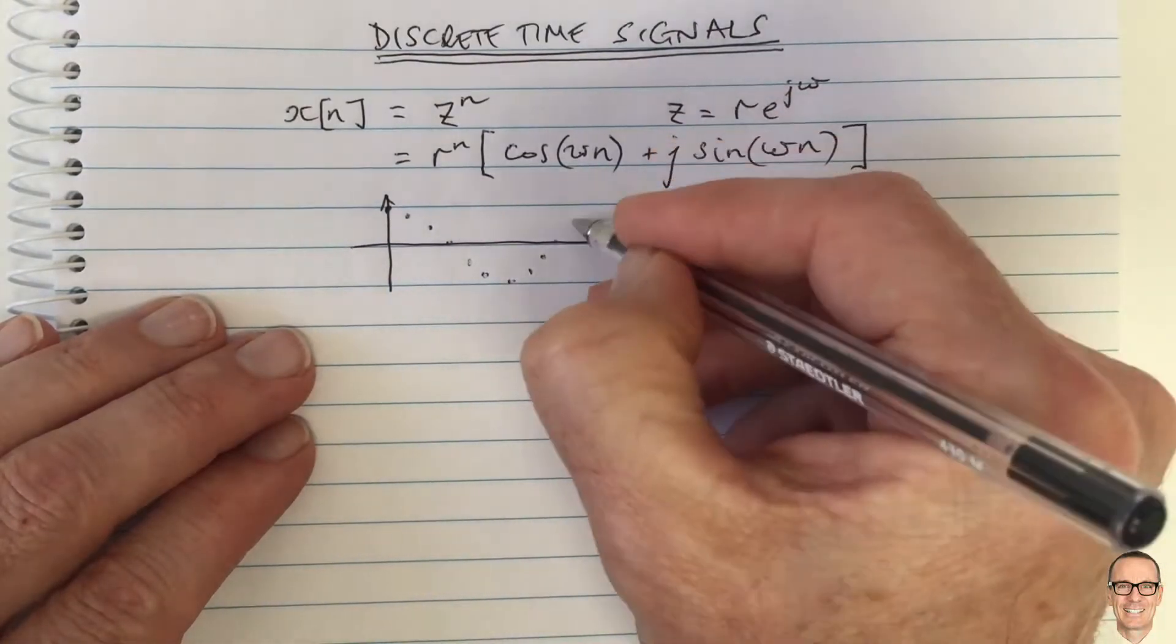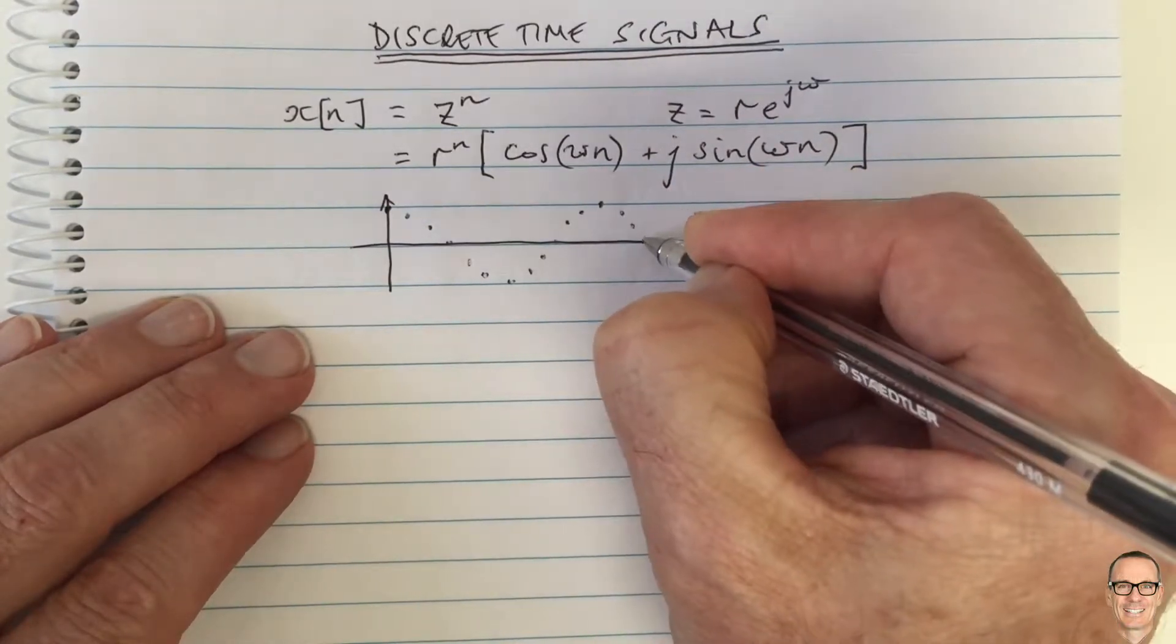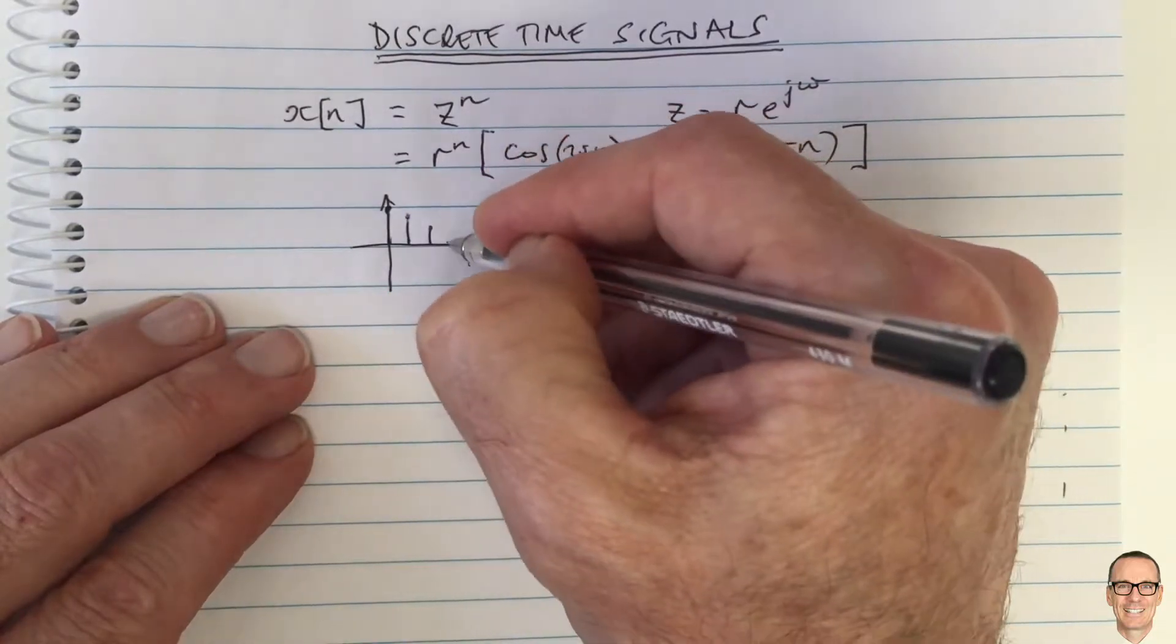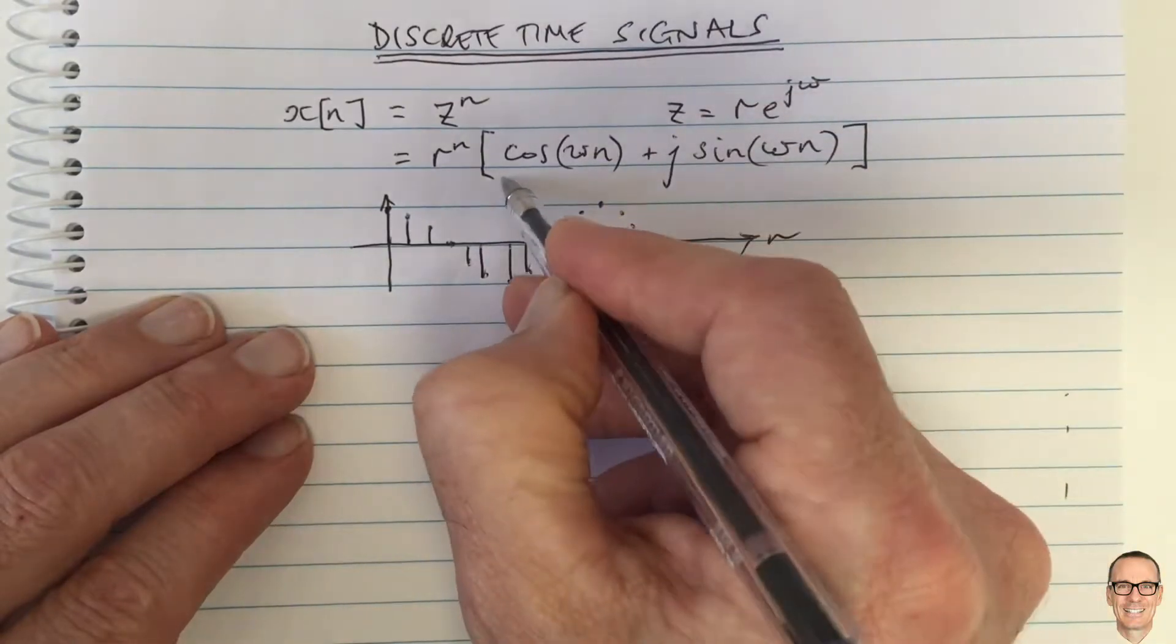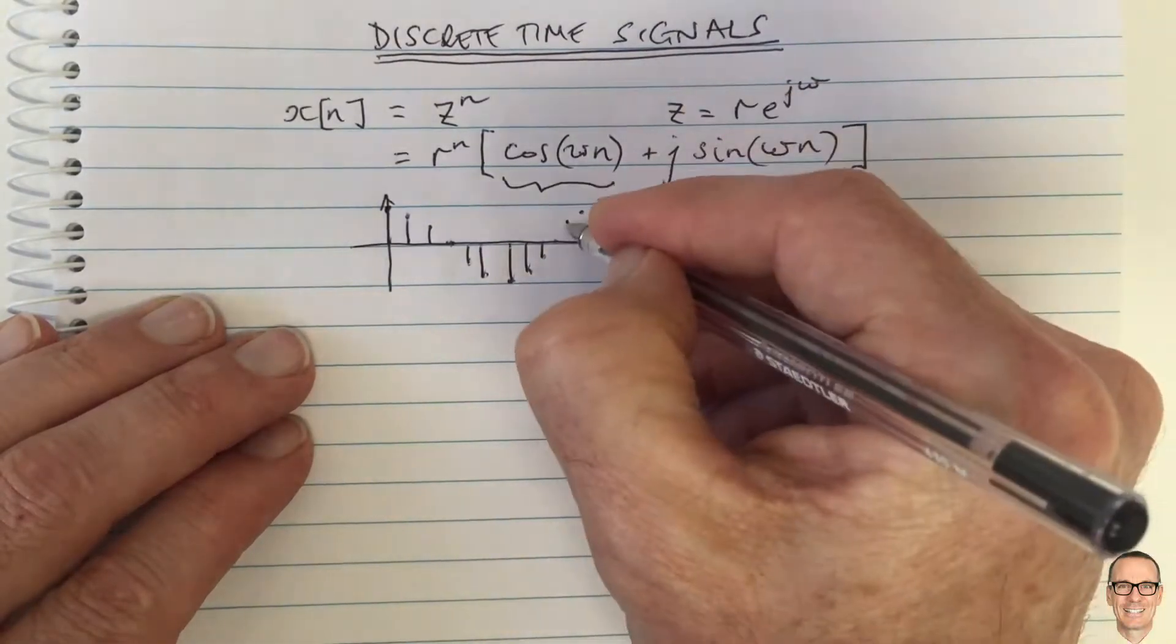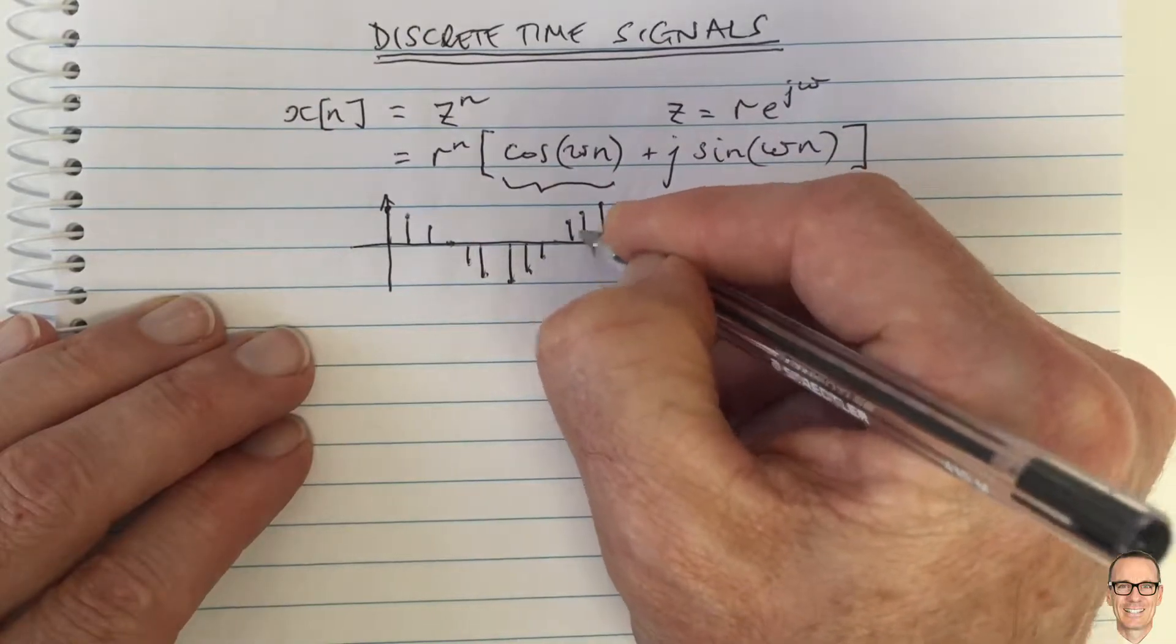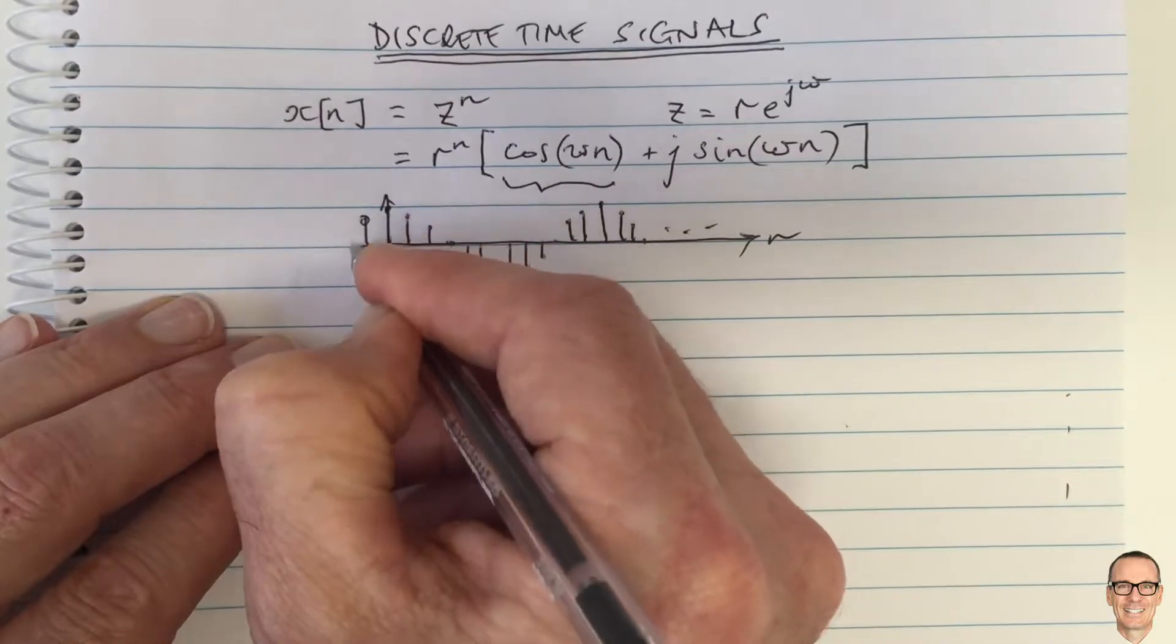It only exists at those times, and it's a cos waveform - that's this function here. That's what it looks like. Of course, it continues on and has the negative values as well.